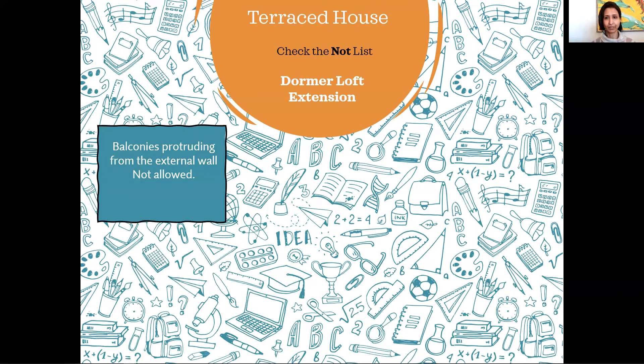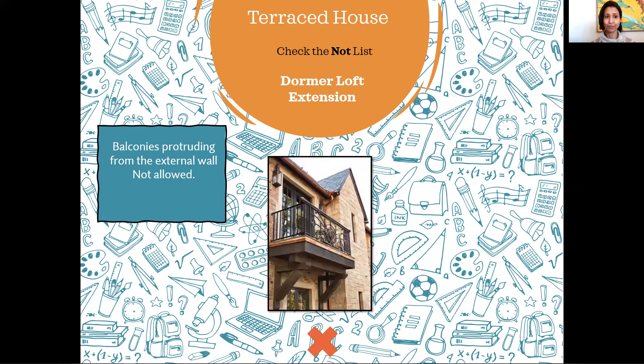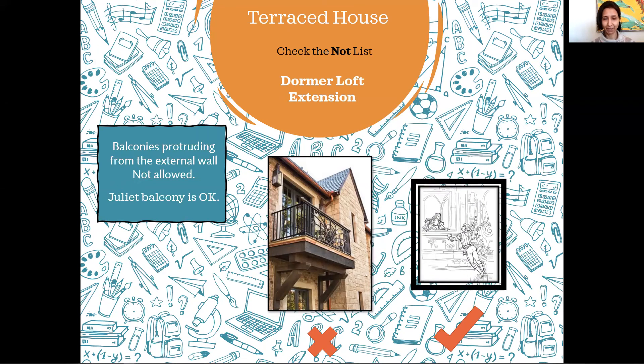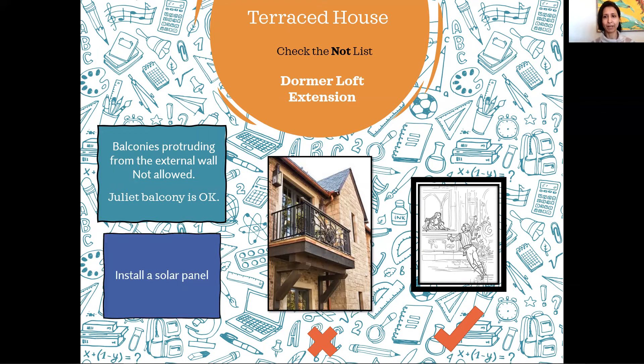No balconies should protrude or extend forward from new or existing external walls — so a full balcony cannot be done under PD rules. However, Juliet balconies can be installed to encourage your romantic side. Remember, the materials used on the external walls of your proposed extension should be similar to those used on your existing house. As a slight deviation from this material rule, you can install solar panels on your roof — but they should not be visible from the road, street, or highway in front of your house. So that covers all you can extend at roof, loft, or attic level on a detached or semi-detached house.